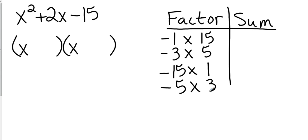So, now let's find the sums. What's negative 1 plus 15? That's going to give me 14. Negative 3 plus 5. That's going to give me positive 2. Negative 15 plus 1 is negative 14. And negative 5 plus 3 is negative 2. So, I am looking for a positive 2, which is right here.